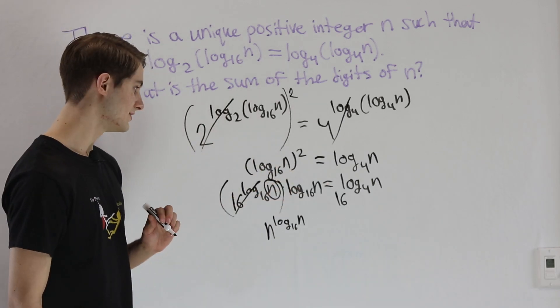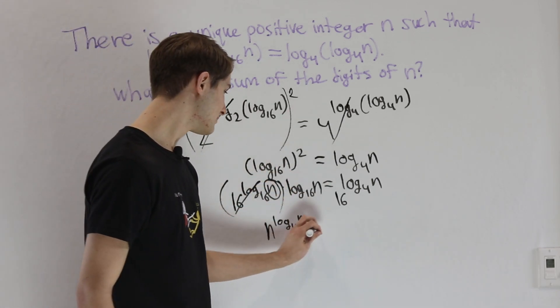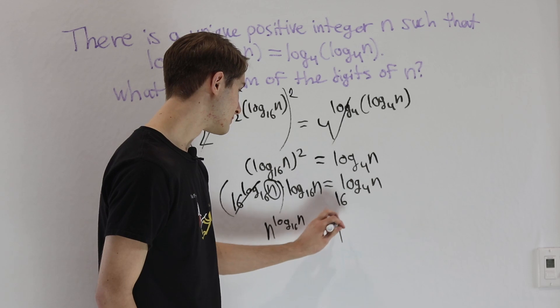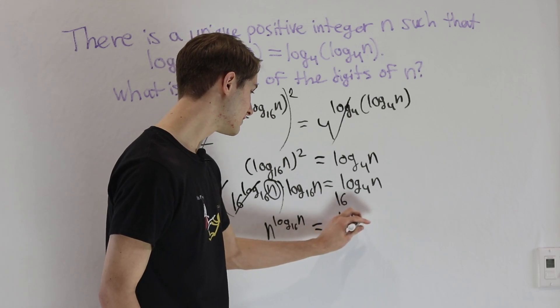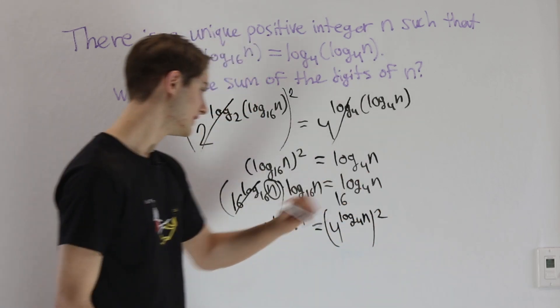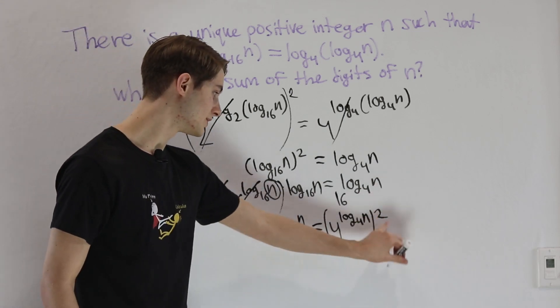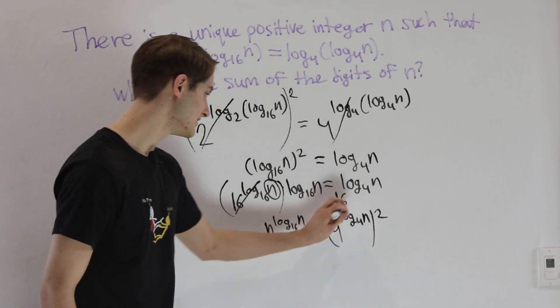On the right side of the equation, we can write 16 as 4 squared. So we can write this as 4 to the log base 4 of n and then squared, since 4 to the power of 2 gives us that 16.